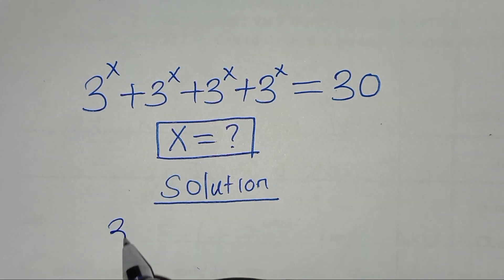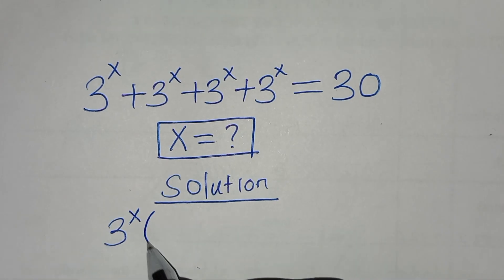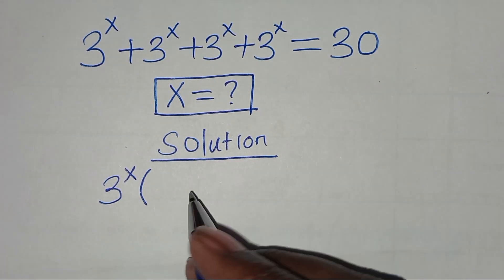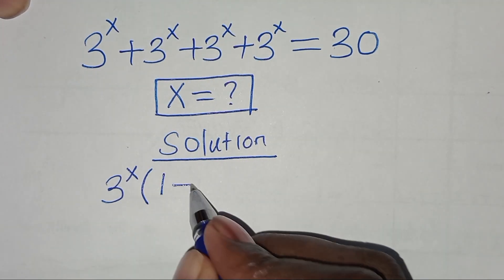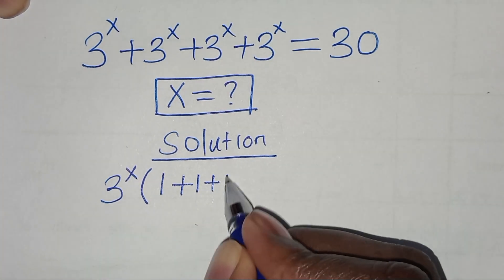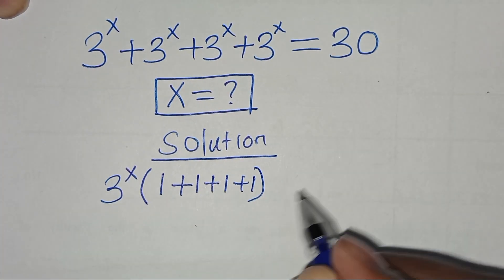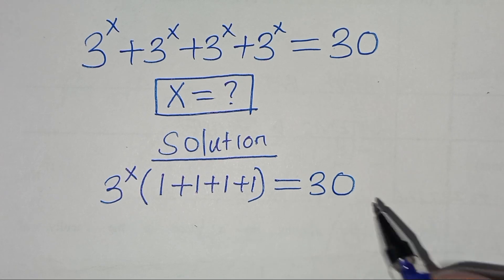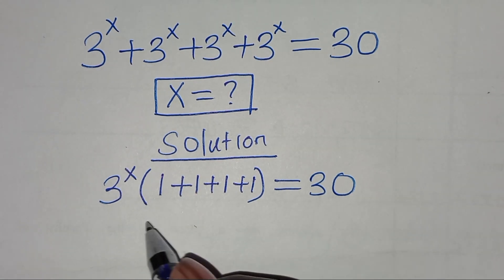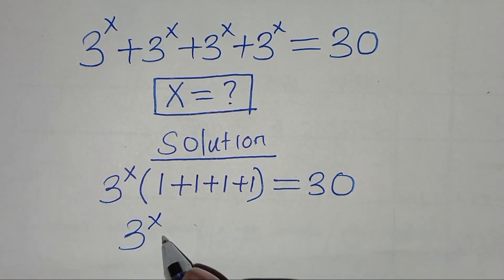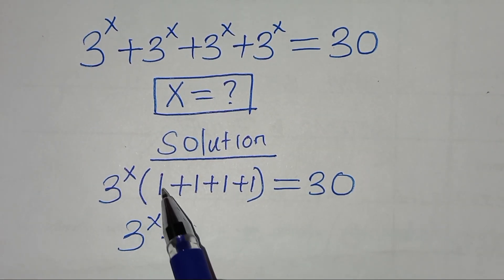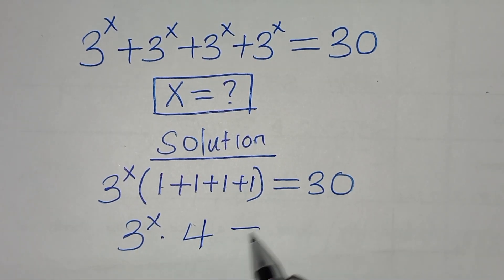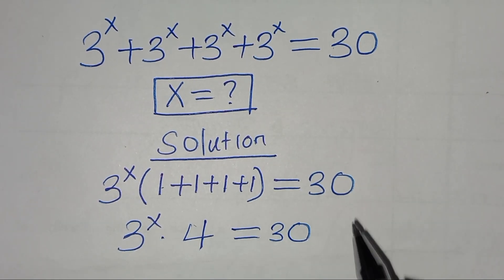Now 3 to the power x is common here, so we factor out 3 to the power x, so that into the parentheses we'll have 1 plus 1 plus 1 plus 1. This is equal to 30. So we have 3 to the power x times 1 plus 1 plus 1 plus 1, which is the same thing as 4, and this is equal to 30.